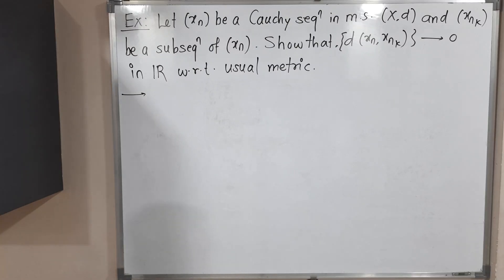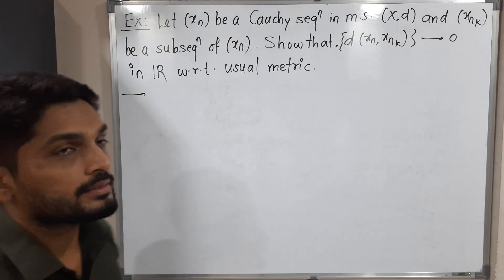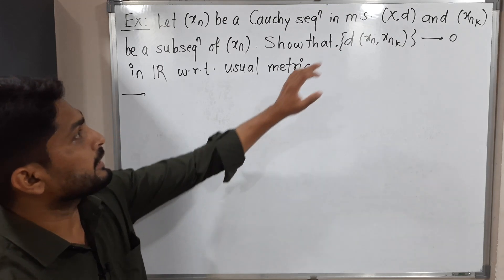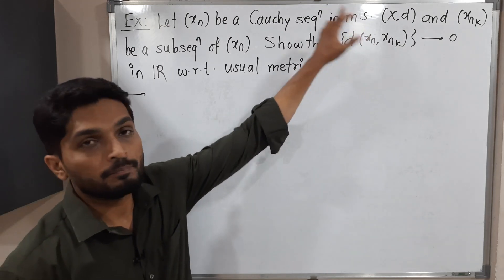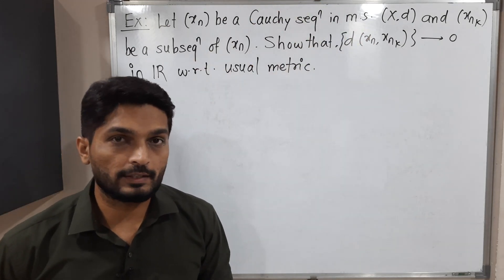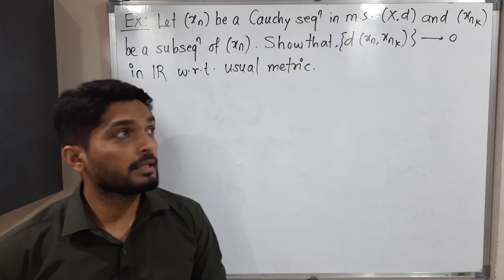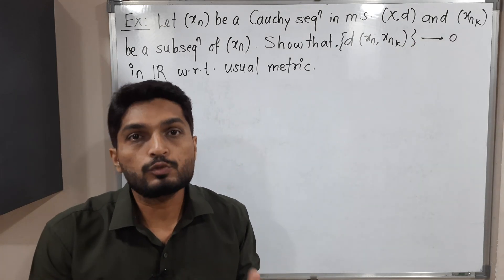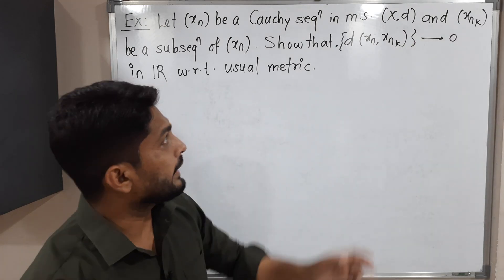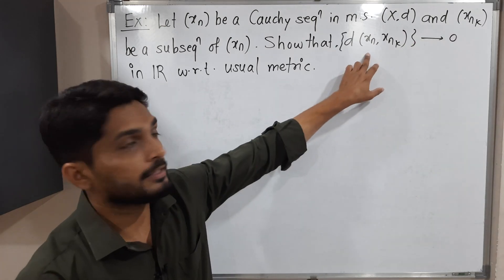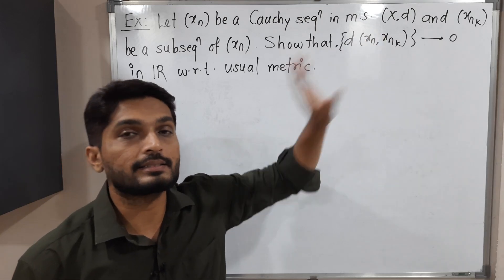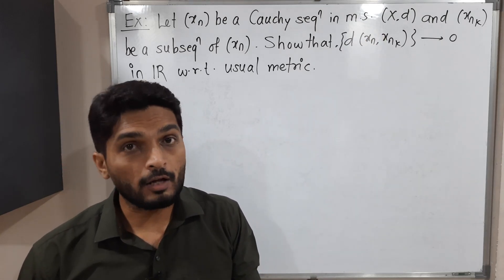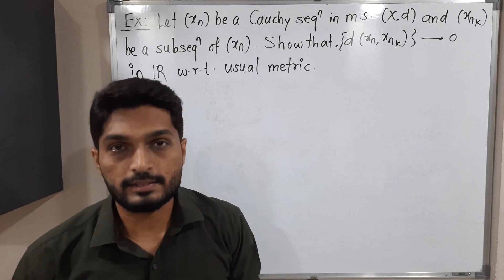Hi everyone. In this video we are going to discuss this example. We have a metric space (X, d) where xn is a Cauchy sequence. Given that xnk is any subsequence of xn, we have to prove that the sequence d(xn, xnk) converges to 0 in ℝ with the usual distance.